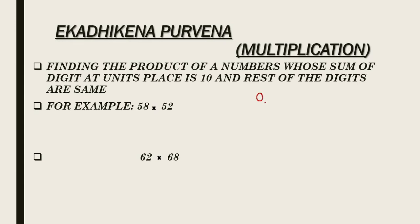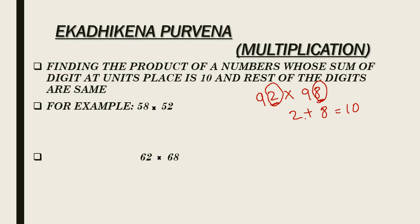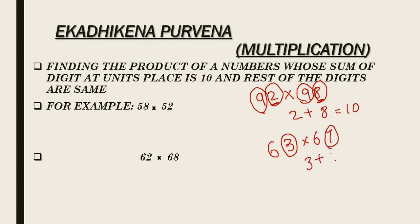let us take numbers 92 and 98. As you see the digits at the units place are 2 and 8. When I add 2 plus 8 it comes to 10. This is the meaning of the first condition — a number whose sum of the digits at the units place is 10 — and the number at the tens place is same, that is 9.